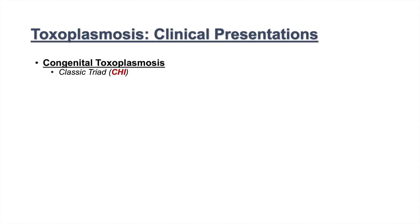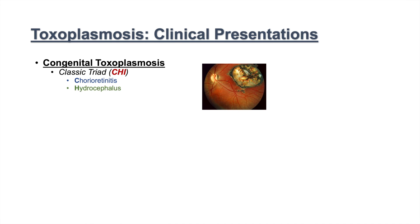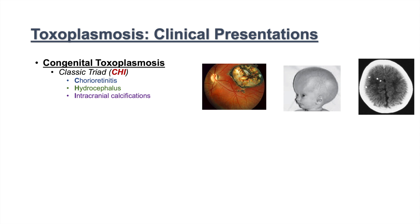Congenital toxoplasmosis has a classic triad of three signs and symptoms. We're going to use a mnemonic device CHI, or HIC as in hiccup, to remember these three signs and symptoms. The first is chorioretinitis, the second is hydrocephalus, and the third is intracranial calcifications. Congenital toxoplasmosis can also lead to microcephaly. Toxoplasmosis is one of the TORCH infections — the T in TORCH stands for toxoplasmosis — and it is one of the infections that leads to intrauterine growth restriction.